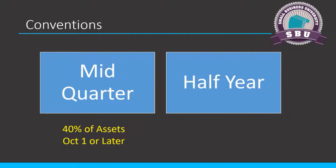MACRS stands for Modified Asset Cost Recovery System. It's really just a made-up name for a bunch of rules that you can't guess at. One of the tenets of MACRS is something called the convention. You can have a half-year convention and a mid-quarter convention. There is also a mid-month convention, but that applies to real estate, so I'm not going to worry about it here — I'll mention it when I talk about real estate depreciation in a few slides.